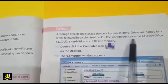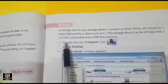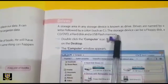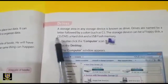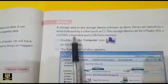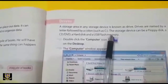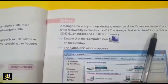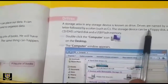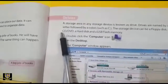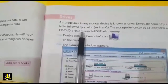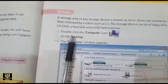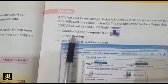The storage device can be a floppy disk, a CD, DVD, a hard disk, and a USB flash memory. To access drives, you double-click the computer icon on the desktop.